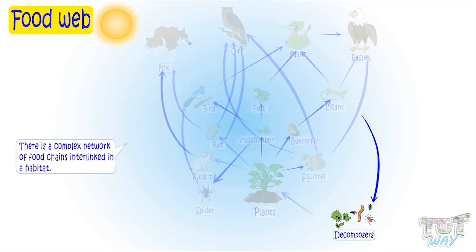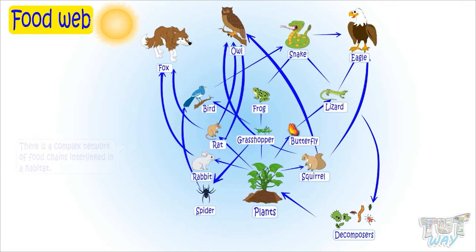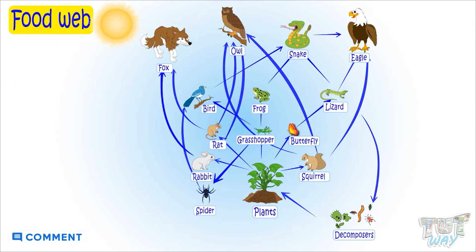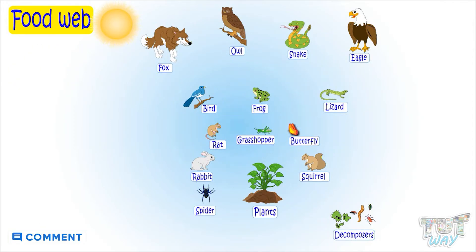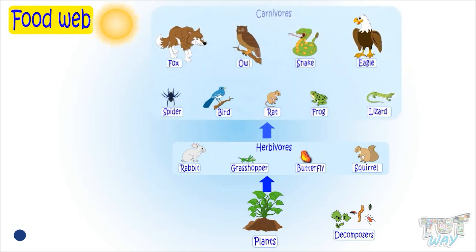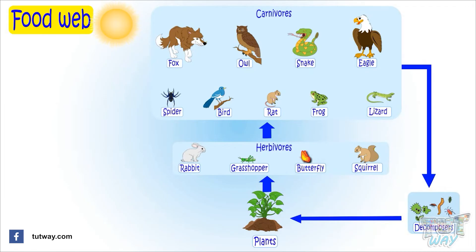There is a complex network of food chains interlinked in a habitat. Arrows in food chain not only show who eats whom, but they also show the direction of flow of energy in the food chain. Like in this example, energy is flowing from the producers to the herbivores, herbivores to the carnivores, and carnivores to the decomposers.